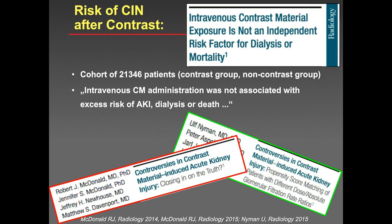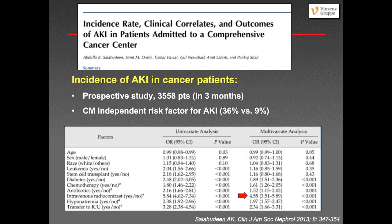Patients with cancer are slightly different because they have underlying disease. Some studies have specifically dealt with this issue of cancer patients needing contrast-enhanced CT. One study published in 2013 looked at the incidence of acute kidney injury in more than 3,000 cancer patients who received contrast-enhanced CT, and found that contrast material is an independent risk factor for acute kidney injury — 36% versus 9%. Intravenous radiocontrast had an odds ratio of 4.55, meaning the likelihood is four times higher that cancer patients develop acute kidney injury.